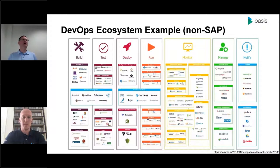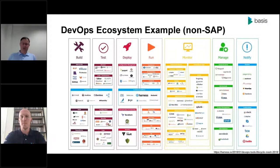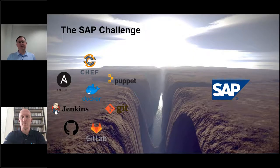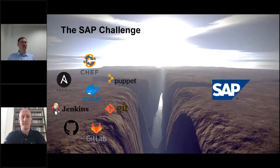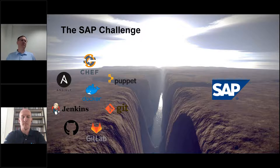No customer would ever implement all of this tooling — this is just all the different examples. What you might do is have one from each column, maybe two. Perhaps you adopt JIRA for backlog management, or Docker for containers and deployment of web services. But we've got a particular challenge in SAP: all of those icons make a lot of assumptions about the underlying infrastructure and architecture of the systems they run on.